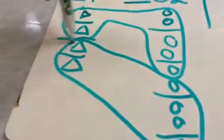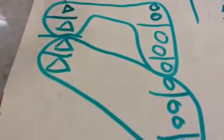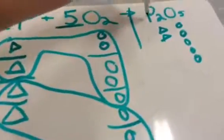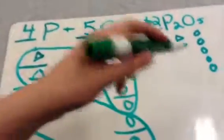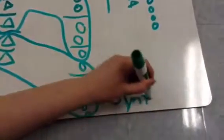And this all makes another atom. So, four phosphorus plus five O2s create two P2O5s, and this reaction would be a synthesis reaction.